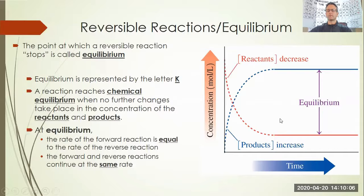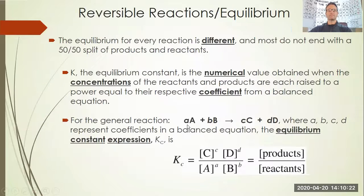At equilibrium, the rate of the forward reaction is equal to the rate of the reverse reaction. The forward and reverse reactions continue at the same rate — that doesn't mean the same amount of products and reactants are being made. It just means that reactants are being turned into products at the same rate at which products are being turned into reactants. The equilibrium for every reaction is different, and most do not end with a 50/50 split of products and reactants.